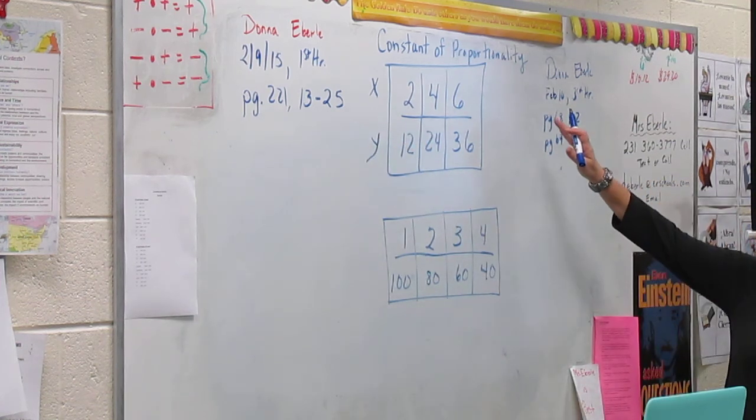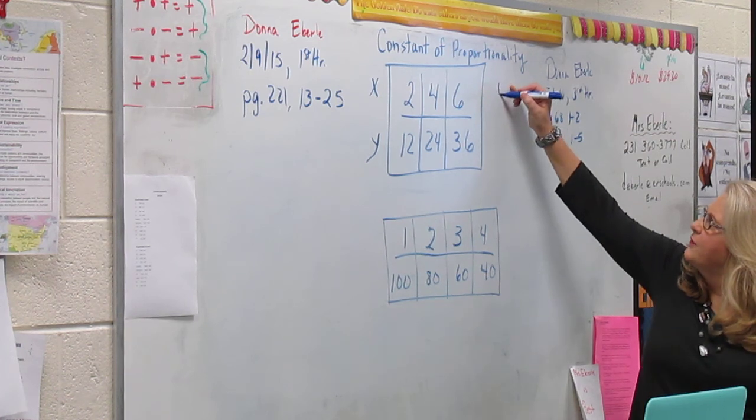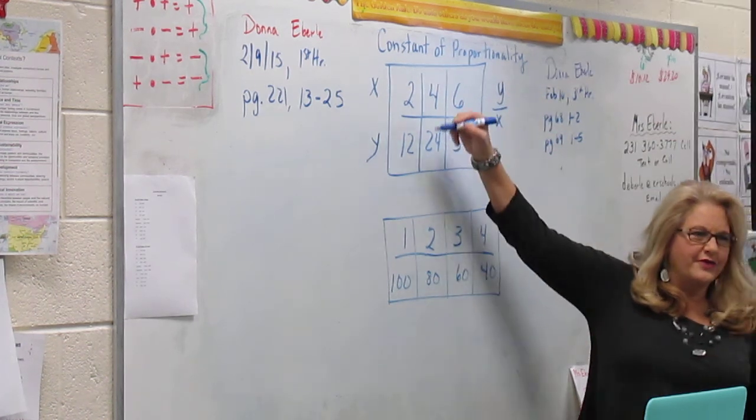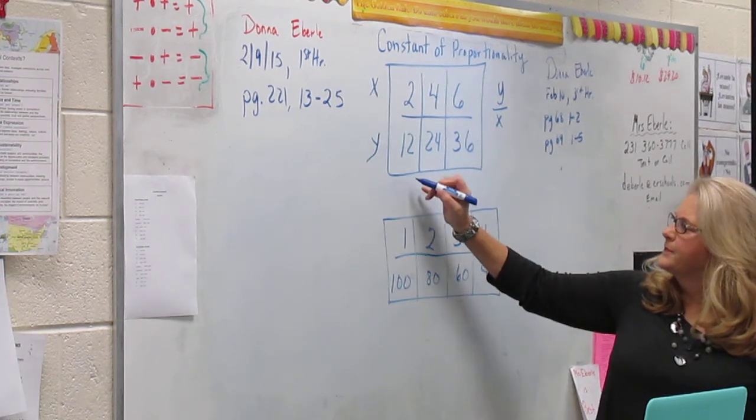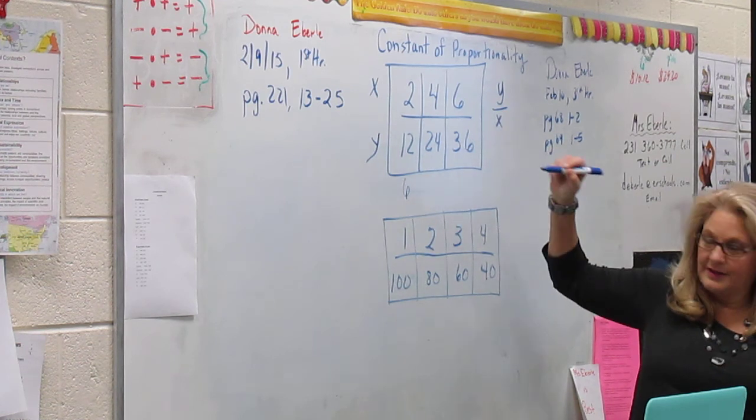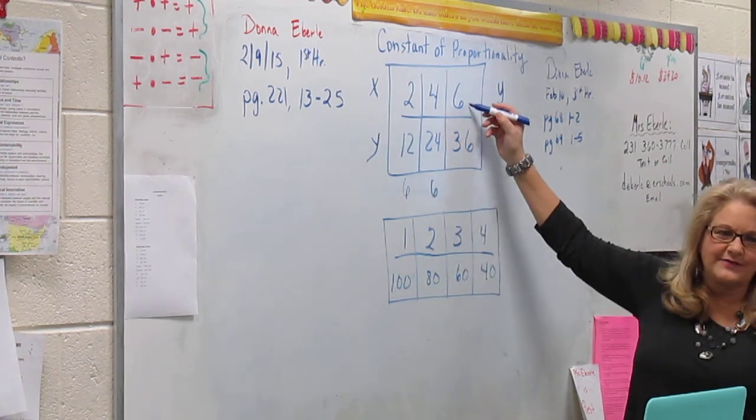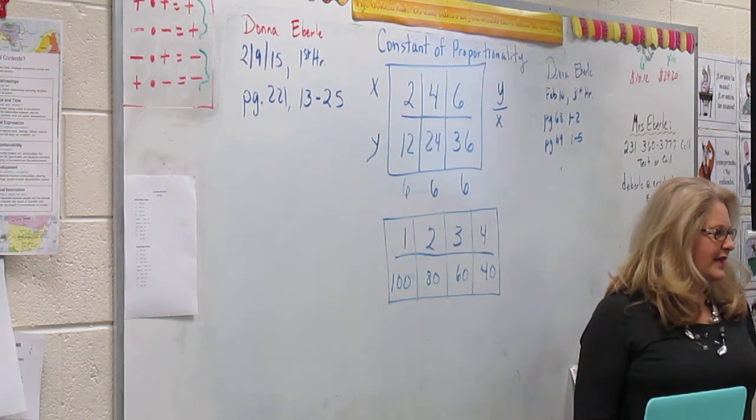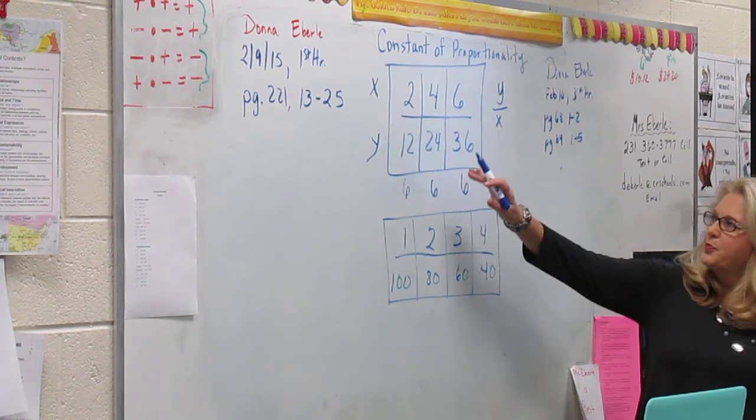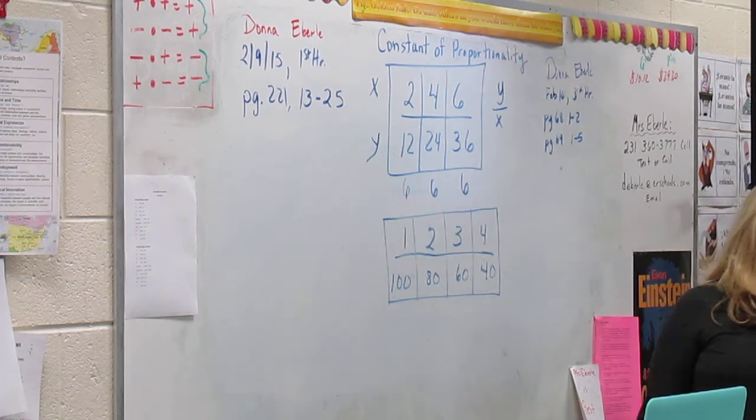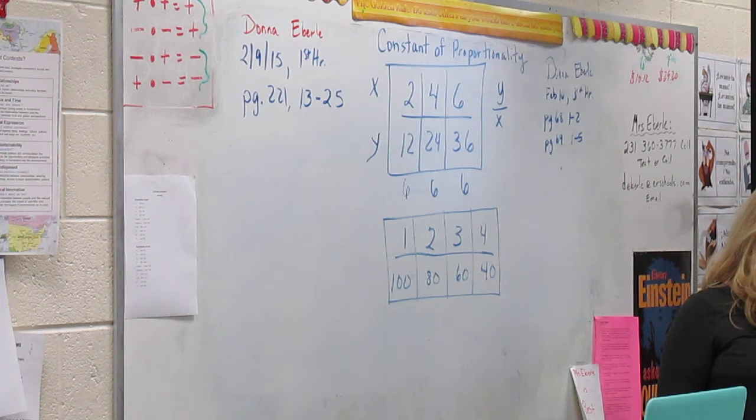When you're finding the constant of proportionality, we're looking at the formula Y divided by X. So 12 divided by 2? 6. Good. 24 divided by 4? 6. And 36 divided by 6? 6. Good. So do we have a constant of proportionality? We know it's a proportional relationship, but the constant of proportionality would be 6.